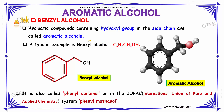Benzyl alcohol. Aromatic compounds containing a hydroxyl group in the side chain are called aromatic alcohols. A typical example is benzyl alcohol, which is C6H5CH2OH. The following diagrams show cyclic structures of benzyl alcohols.